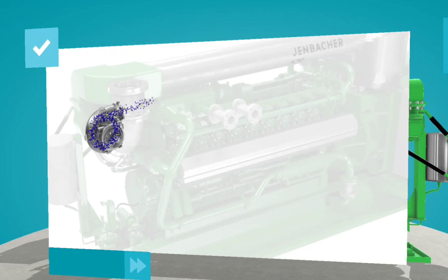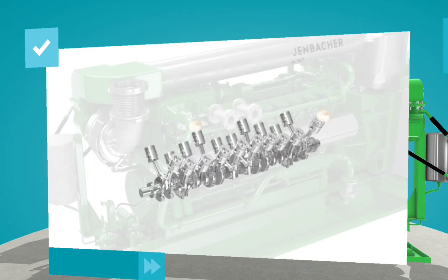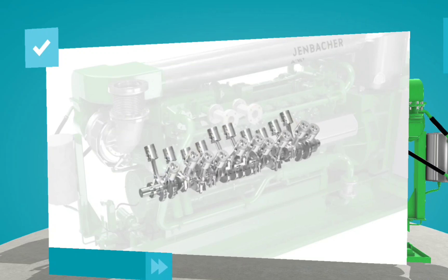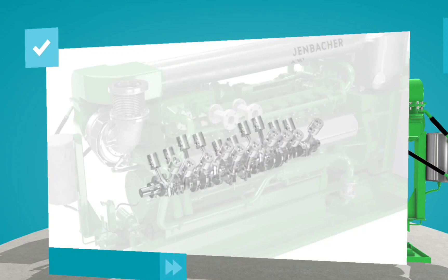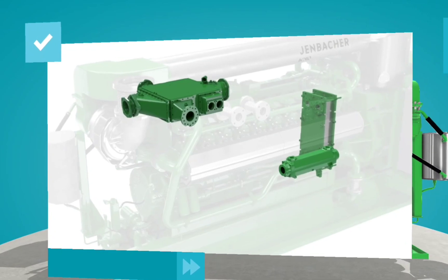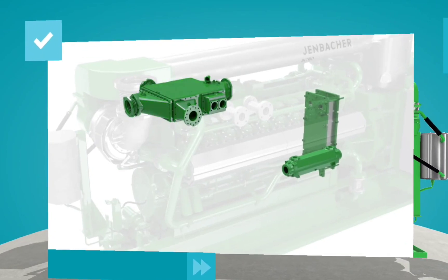Heat is produced when the air-gas mixture is compressed in the turbocharger, and then combusted in the combustion chamber. Heat exchangers around the engine extract heat directly from the air-gas mixture, from the oil circuit, and from the jacket water circuit.